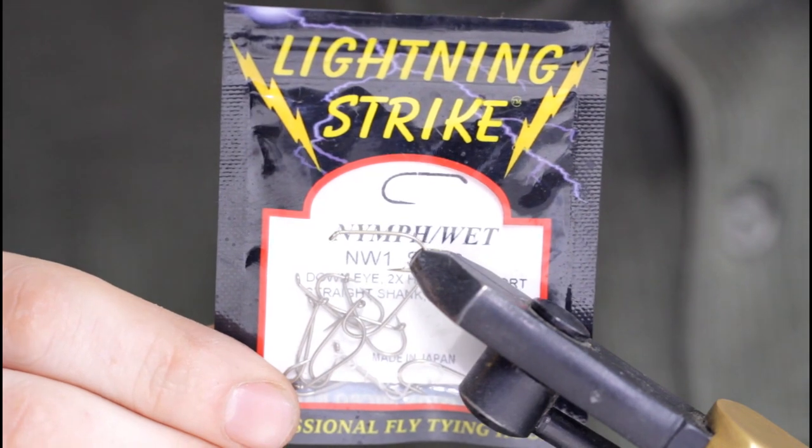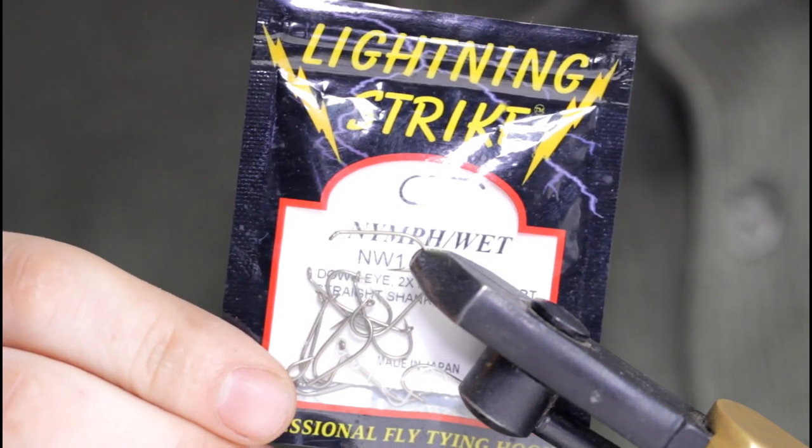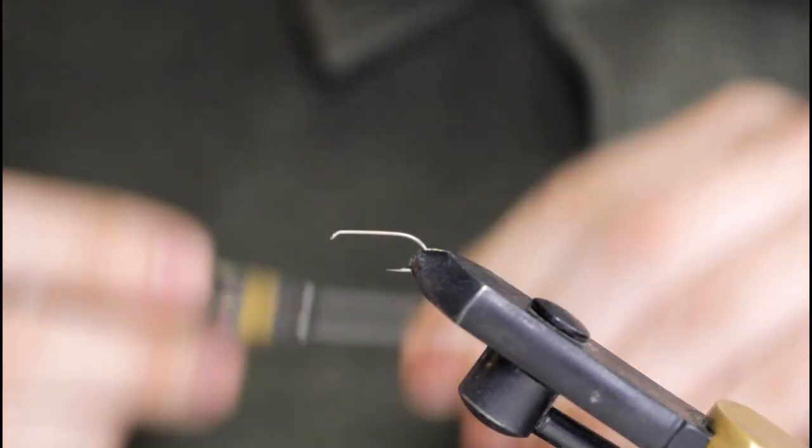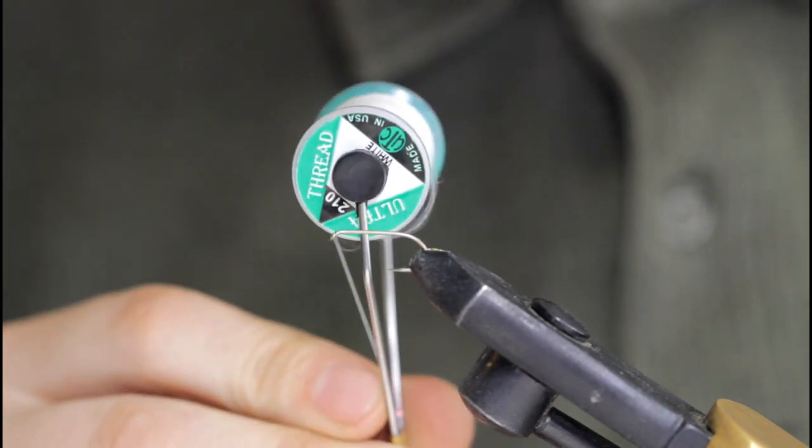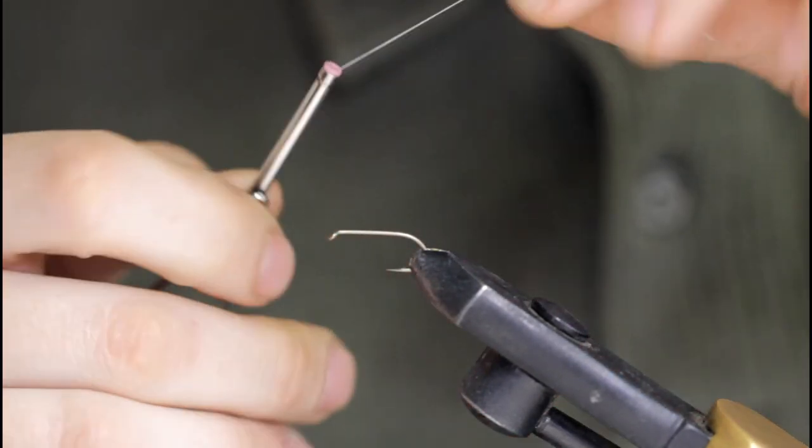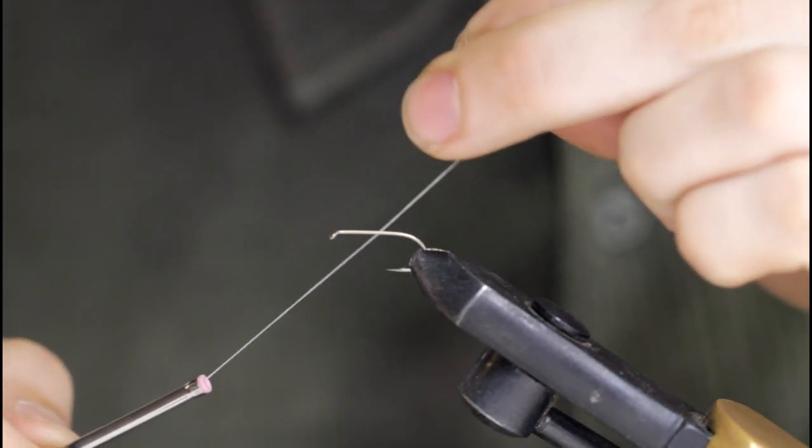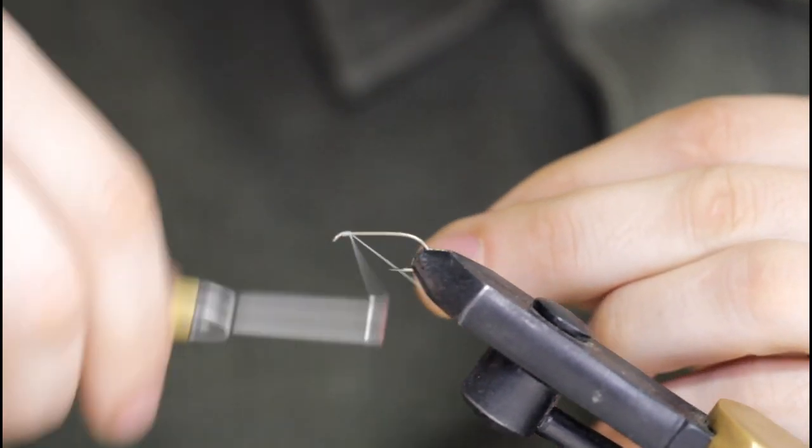Welcome back guys, today I'm going to be tying up the Miss Shearing streamer. I'm going to start with a size 8 nymph wet hook in the vise and some 210 UTC thread in white. I'm going to start at the hook eye and work my way down.